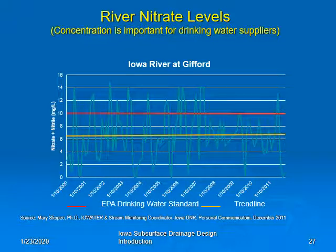Looking at values from the Iowa River at Gifford between 2000 and 2011, this graph shows an annual variation in nitrate levels. Almost every year has a peak above the drinking water standard of 10 milligrams per liter, and yet later in the year we have levels sometimes near zero milligrams per liter. So it's quite variable.